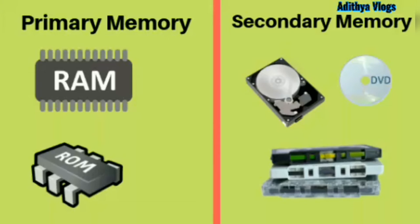Fourth question: Memory devices are of two types — blank and blank. The answer is: primary and secondary. Fifth question: A volatile primary memory has a faster accessing speed than ROM. The answer is: RAM. Next question: What is the full form of ROM? The options are: Random Only Memory, Random Order Memory, Read Only Memory, Read Order Memory. The answer is: Read Only Memory.